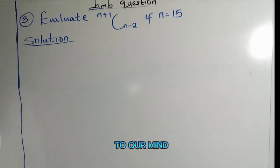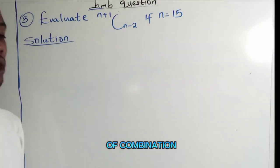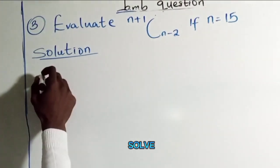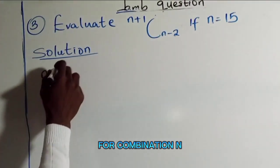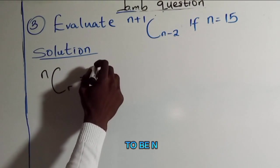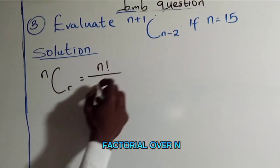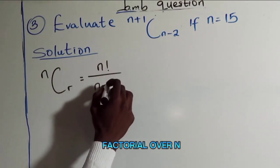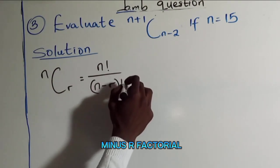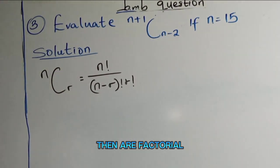The first thing that should come to mind is the formula for combination. For combination, n combination r equals n factorial over n minus r factorial, times r factorial.